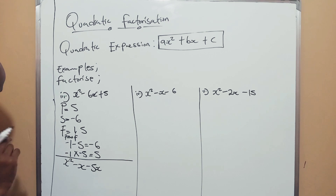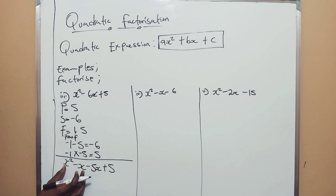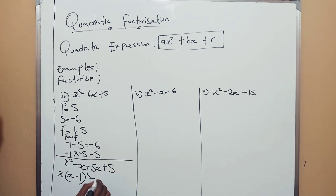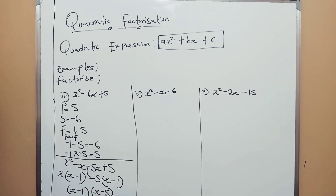Make sure you watch the fundamentals of mathematics video. Now factorize: what's common between x squared and negative x? It's x, so x(x minus 1). Then what's common between negative 5x and positive 5? It's 5, so negative 5(x minus 1). Since what's in the brackets is the same, you just pick one: x minus 1. And what's outside the brackets: x minus 5. So the answer is (x minus 1)(x minus 5). Very easy once you get the fundamentals of maths and signs.